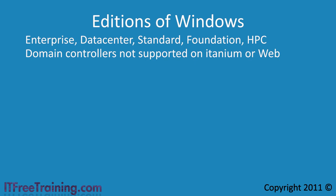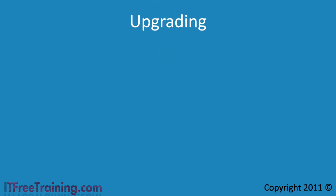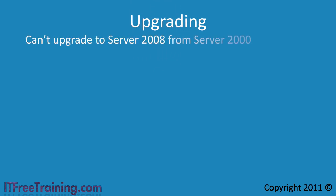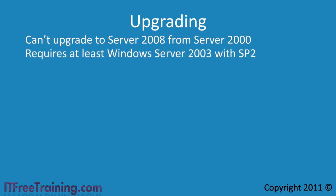One last point: if you are upgrading to Windows Server 2008, you cannot upgrade from Windows Server 2000 directly to Windows Server 2008. You also need to be running at least Windows Server 2003 with Service Pack 2. Lastly, upgrades between different architectures are not supported — that is, you cannot upgrade from a 32-bit operating system to a 64-bit operating system.